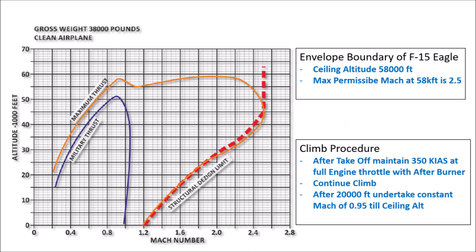The maximum altitude of the DCS F-15 is 58,000 feet. I will maintain a steady IAS of 350 knots till 20,000 feet after takeoff, and thereafter till ceiling height I shall be maintaining Mach 0.95. I will not restrict the altitude to the ceiling limit — I will try and breach the specified limit just to see what happens.